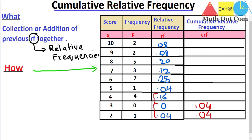Moving further up, we add all the frequencies together to get 0.20. Then moving upward again, we add all the frequencies below the given frequency as well as the frequency itself — all four values from the bottom — giving 0.24. Continuing upward: 0.52, then 0.64, then 0.84, then 0.92, and finally 1.00 by adding all frequencies together. The sum of all relative frequencies equals 1, which is why we get 1.00 at the end.